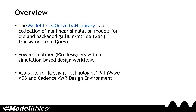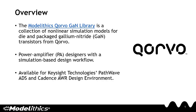The ModelLythics Corvo GAN library is a collection of nonlinear simulation models for die and packaged GAN transistors from Corvo. The library provides PA designers with a simulation-based design workflow, and is available for both Keysight ADS and Cadence AWR design environments. All models are fully documented.